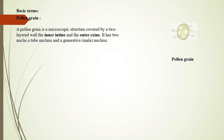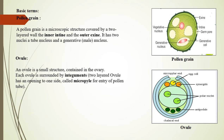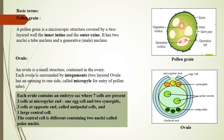Let's understand some basic terms before discussing fertilization. Pollen grain: A pollen grain is a microscopic structure covered by a two-layered wall — the inner intine and the outer exine. It has two nuclei: a tube nucleus and a generative male nucleus. Ovule: An ovule is a small structure contained in the ovary, surrounded by integuments (a two-layered covering) with an opening called the micropyle for entry of the pollen tube. Each ovule contains an embryo sac with seven cells: three at the micropyle end (one egg cell and two synergids), three antipodal cells at the opposite end, and one central cell containing two polar nuclei.